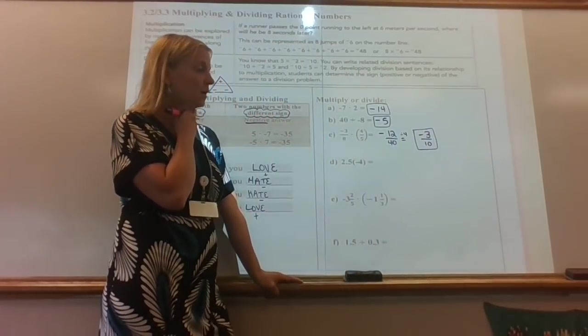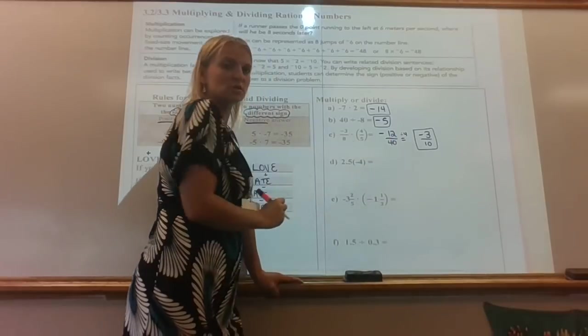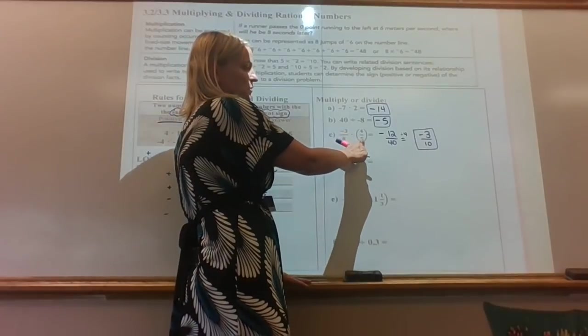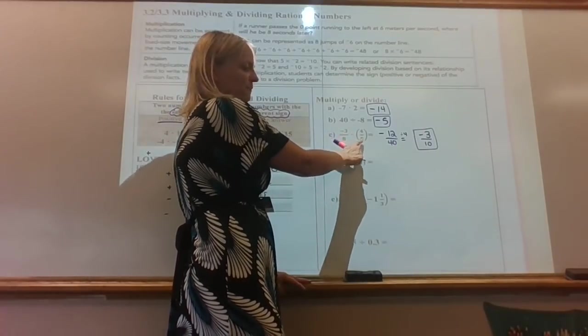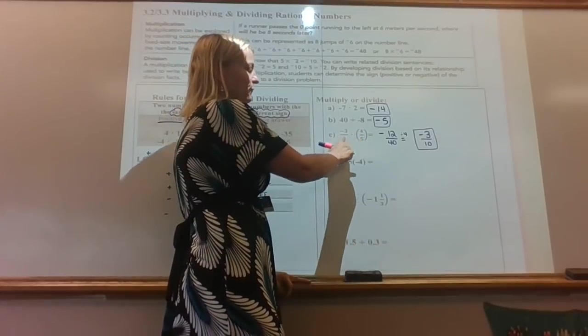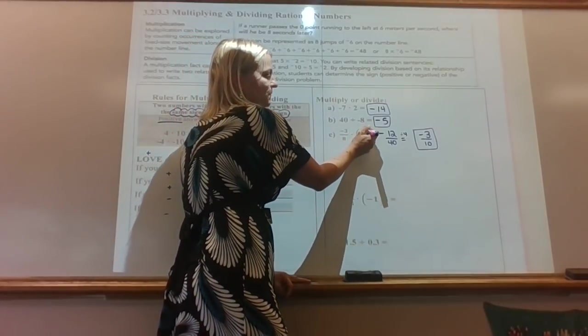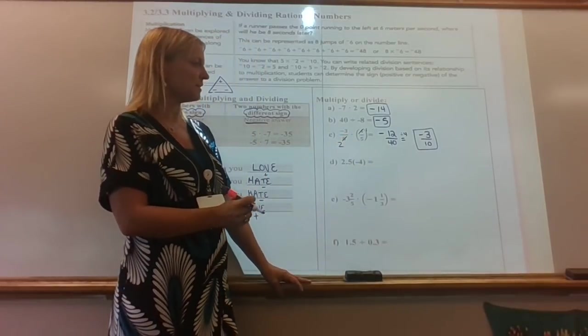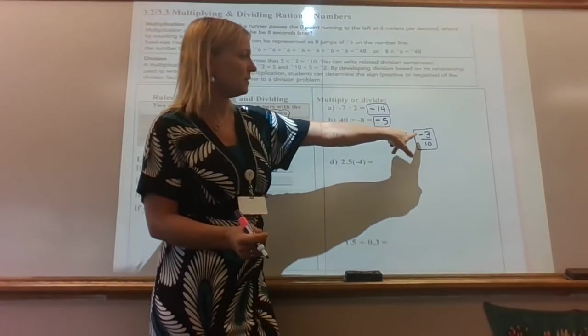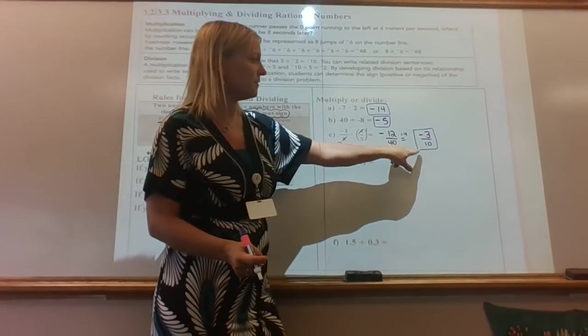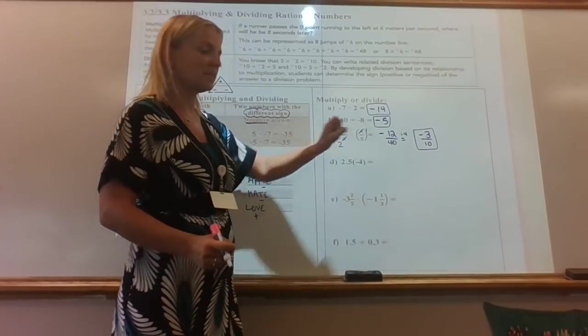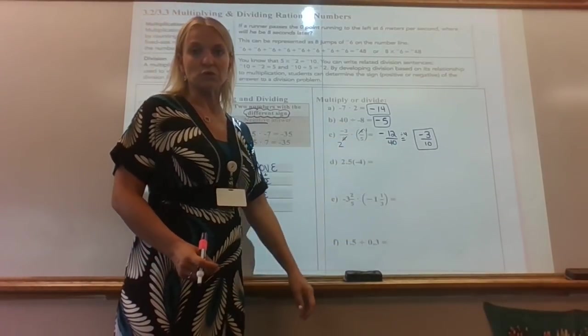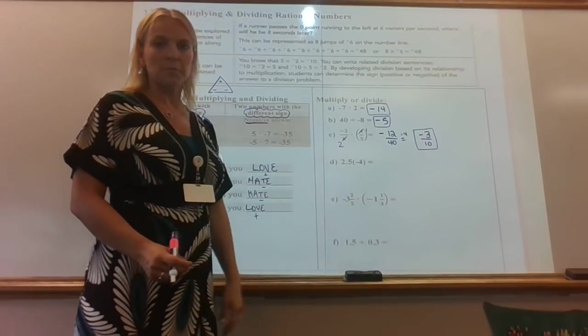Now there is a shortcut here. Instead of just multiplying straight across and then trying to reduce, the shortcut would be to do what we call cross-reducing. And that's where we look to see, does anything reduce diagonally across? Well, three and five, those don't have any common factors, but four and eight do. Four goes into four one time, and four goes into eight two times. So if I cross-reduce like that, then I can just say three times one, there's my three, and two times five, there's my 10. That allows you to skip having these larger numbers in there. It's easier to reduce smaller numbers than larger numbers. So if you can think to cross-reduce, that will help you along the way.